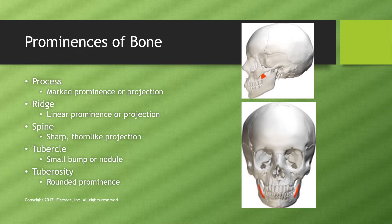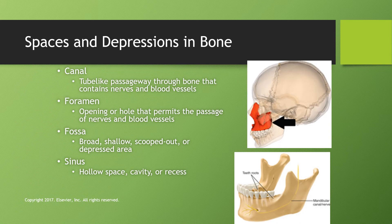Prominences in bone are anything that sticks out. A process is a marked prominence or projection. A ridge is a linear prominence or projection. A spine is a sharp, thorn-like projection — we see this on the anterior nasal spine, and this image is one of the best for seeing it. A tubercle is a small bump or nodule, and a tuberosity is a rounded prominence.